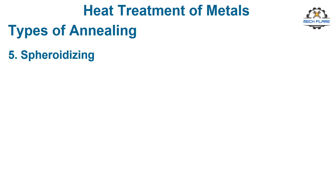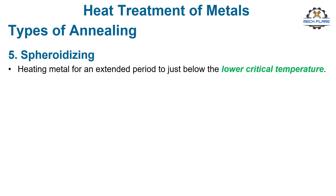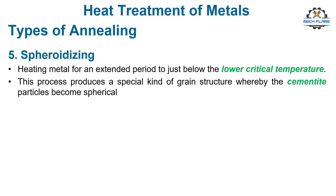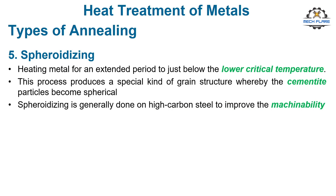Spheroidizing is a process of heating metal for an extended period to just below the lower critical temperature. This process produces a special kind of grain structure whereby the cementite particles become spherical. Spheroidizing is generally done on high-carbon steel to improve machinability.